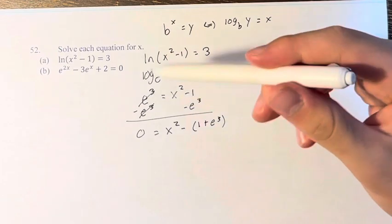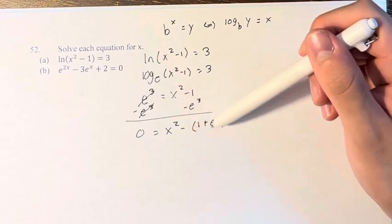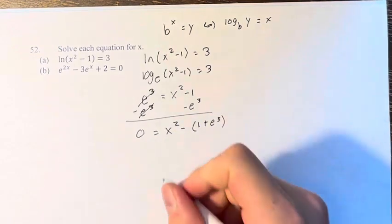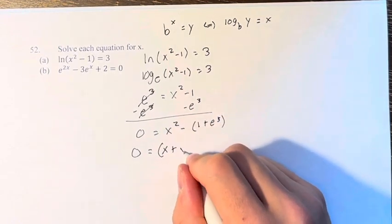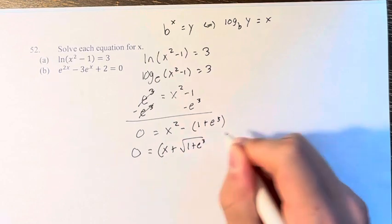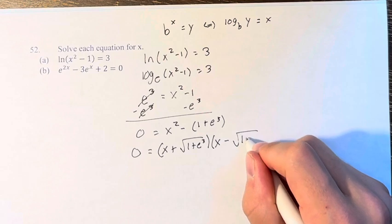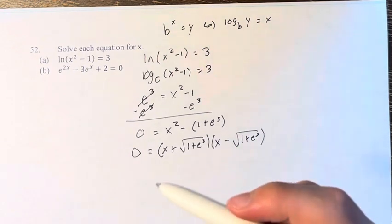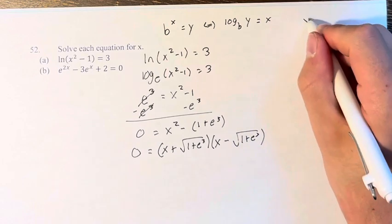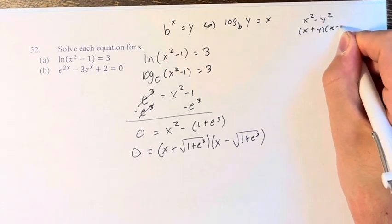So if we take this as the difference of squares, even though it might not seem obvious why we're doing this, we can say this is x plus the square root of this times x minus the square root of this. And this is the same thing as saying x squared minus y squared equals x plus y times x minus y.